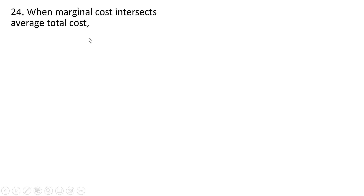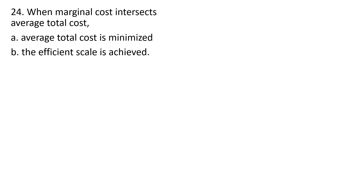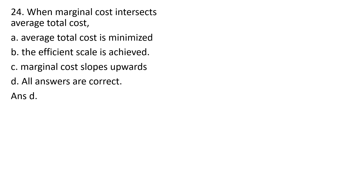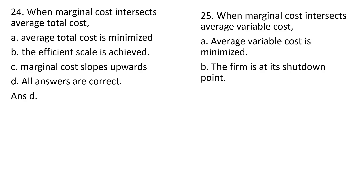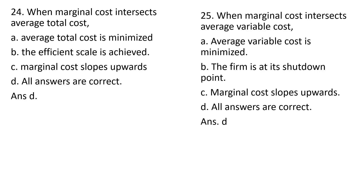Question 24. When the marginal cost curve intersects the average total cost curve, all of these answers are correct: average total cost is minimized — we're at the bottom of the ATC curve; efficient scale is achieved; and marginal cost slopes upward. Question 25. When marginal cost intersects average variable cost: average variable cost is minimized — correct; the firm is at its shutdown point — correct; and marginal cost slopes upward — correct. Answer D, all of these answers are correct.